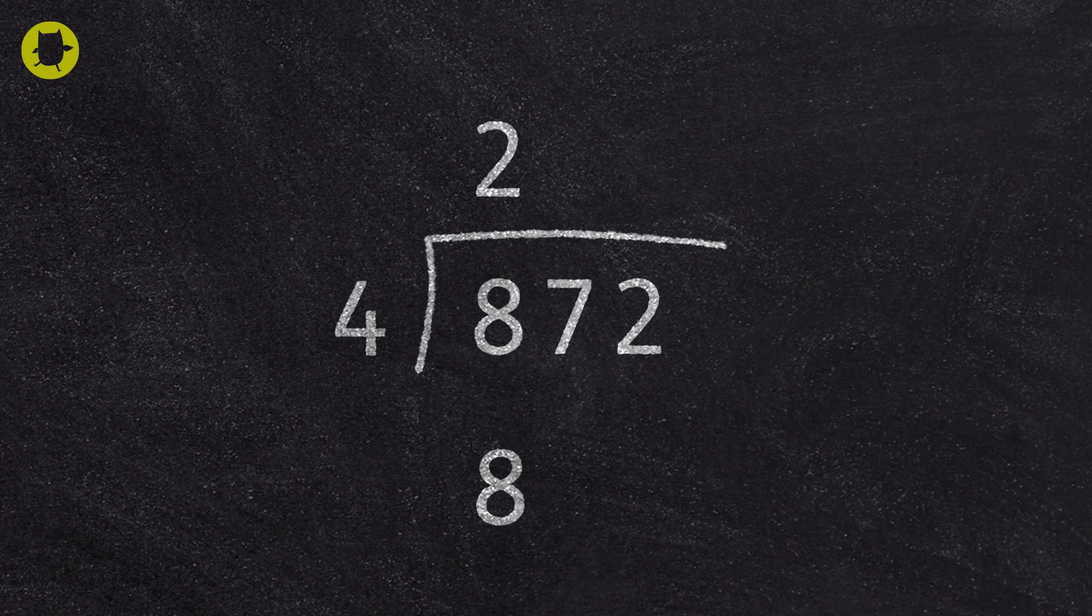Then we ask, what is 8 minus 8? The answer is 0, so we don't need to write anything. Next, we bring down the 7.